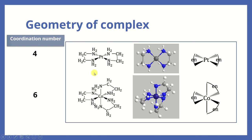Even with a bidentate ligand like ethylenediamine, if we have coordination number 4, it means we have two groups of ethylenediamine. These two groups are linked to the metal ion and arrange the structure into square planar. For example, with platinum as the metal ion, one group of ethylenediamine forms two bonds, and the other group also forms two bonds, making a total coordination number of 4 in a square planar arrangement.